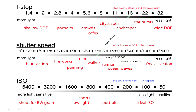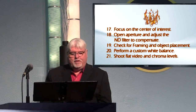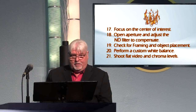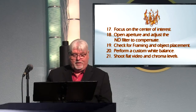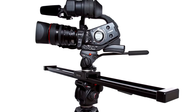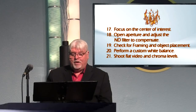ISO relates to the speed of film in photographic terms — the larger the ISO setting, the faster the film could be exposed. Focus on your center of interest, open up your aperture, and adjust the ND filter to compensate. Take a look at your foreground, middle, and background objects. Placing the camera on a slider track will add a little motion that helps the look.